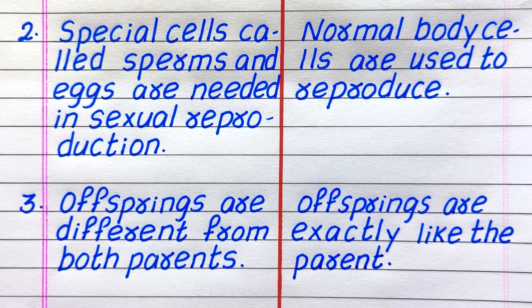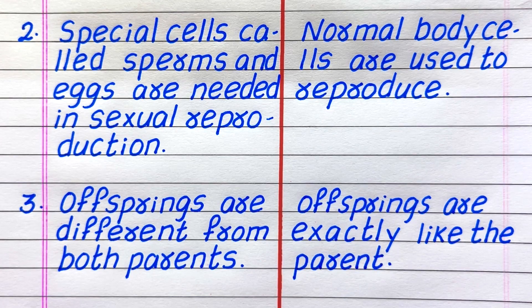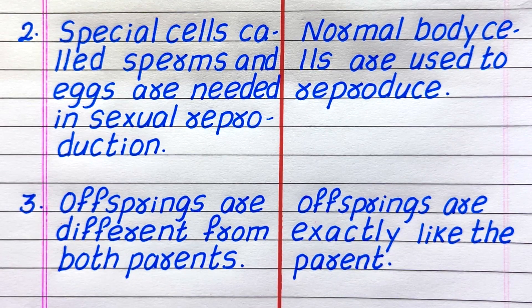Special cells called sperms and eggs are needed in sexual reproduction, while normal body cells are used to reproduce in asexual reproduction.